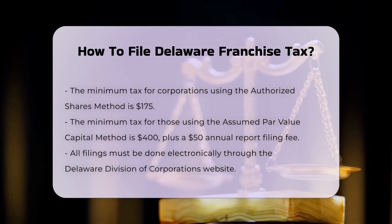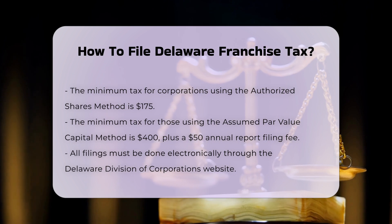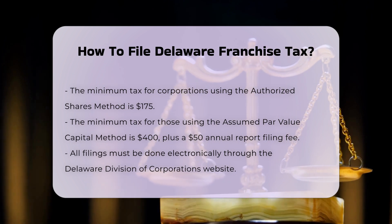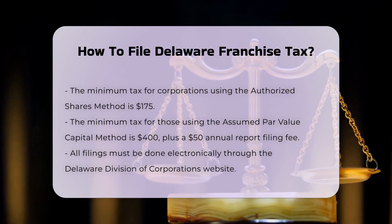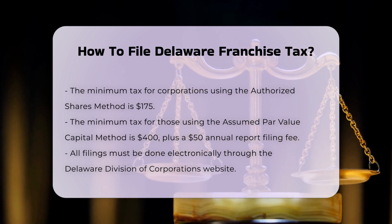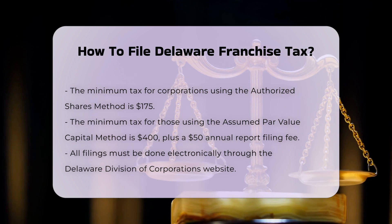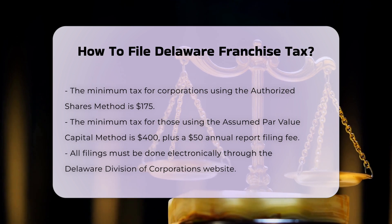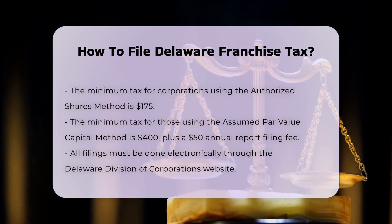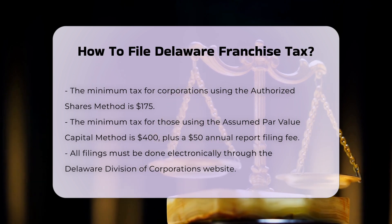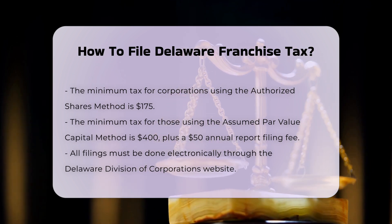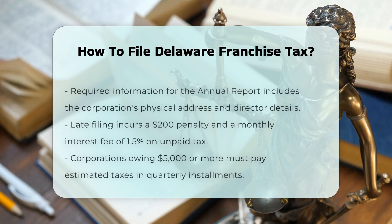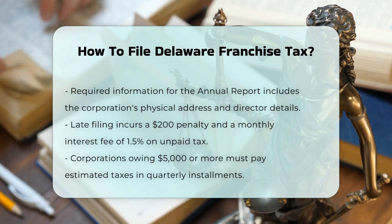Required Information. The annual report must include the corporation's physical address, the names and physical addresses of all directors, and if applicable, the name, title, and physical address of one officer.